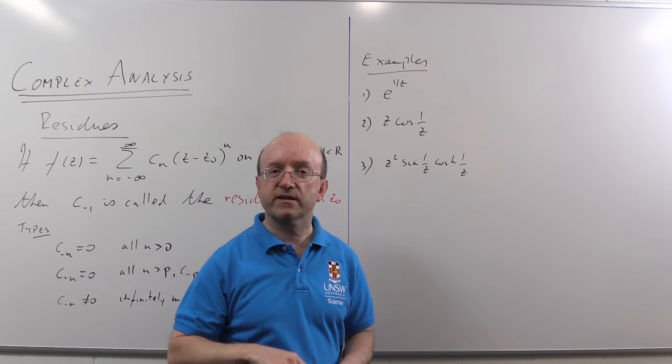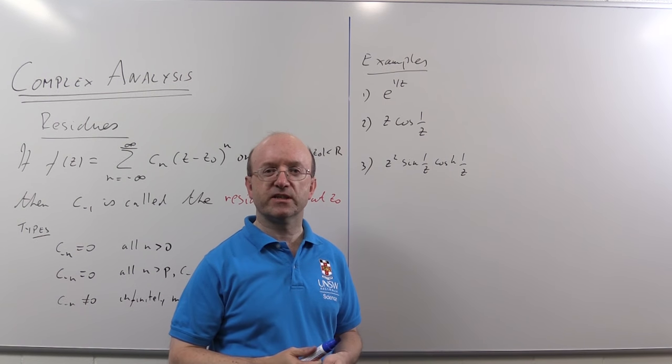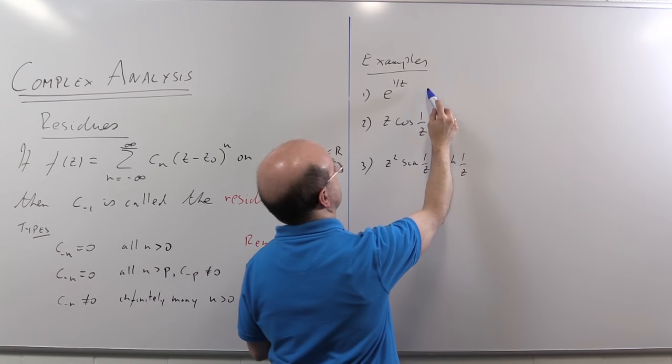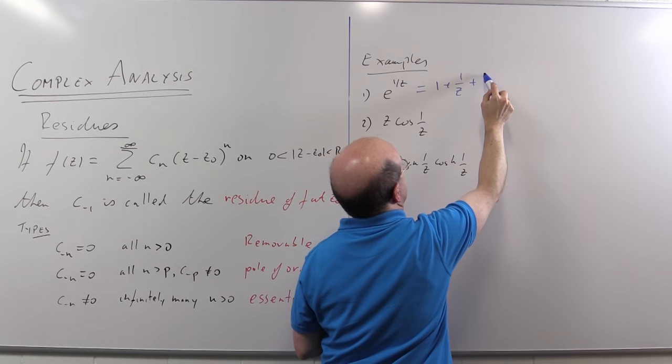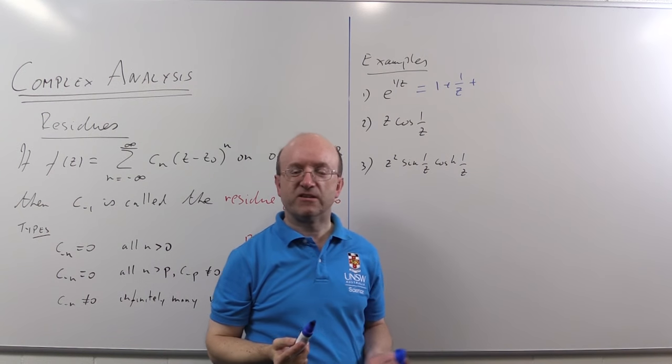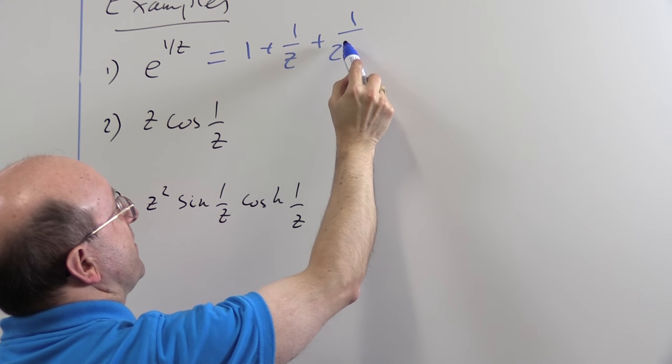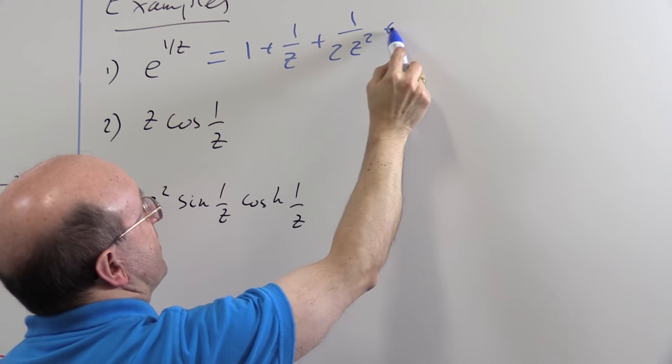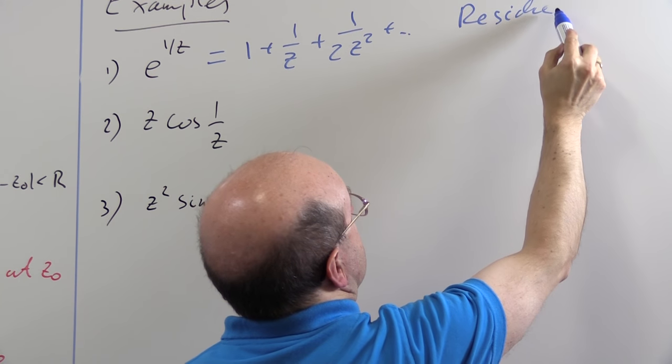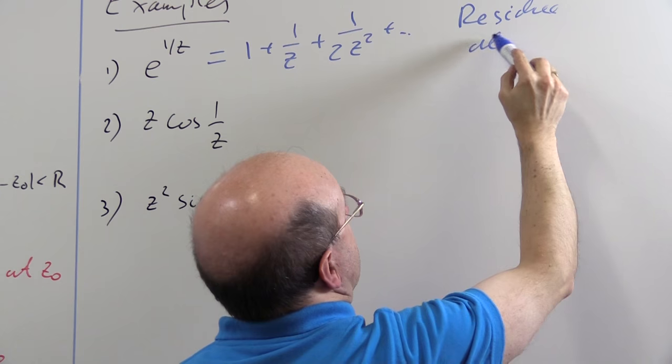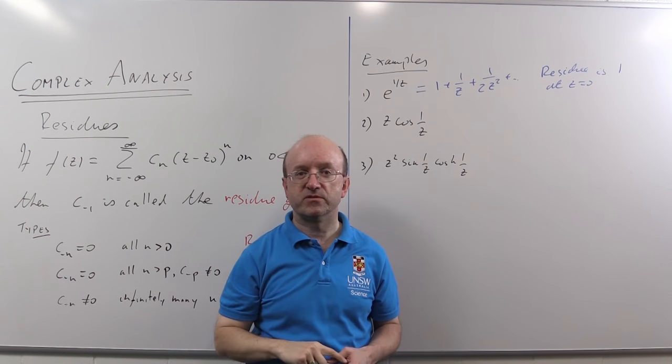Well the first one here is e^(1/z) and I wrote down the power series around z equals zero for that in the video on Laurent series. It's 1 + 1/z + ... In fact I don't really need to go any further. I only need that term. But the next term would be 1/(2!)z² plus and so on. So the residue at z equals zero is simply one, the coefficient of 1/z.